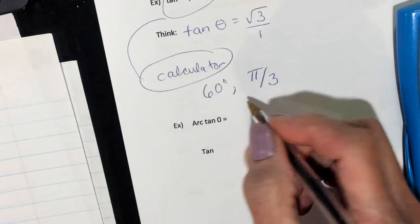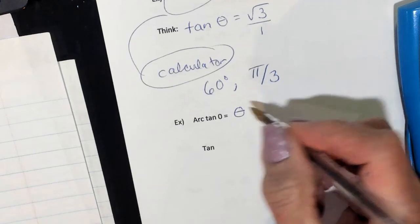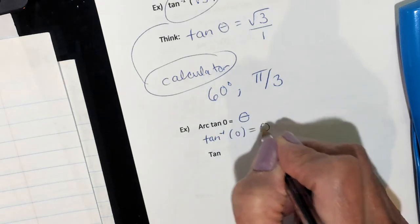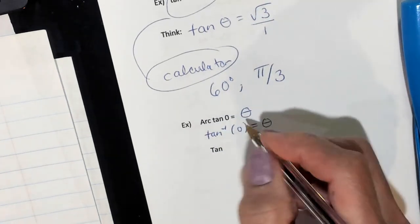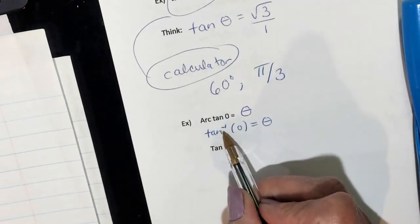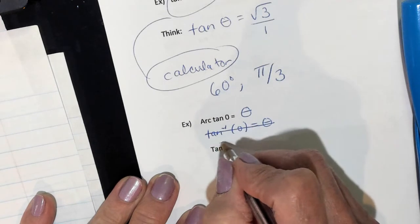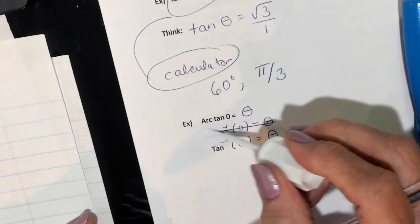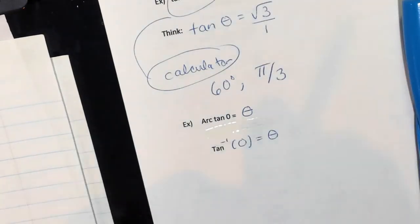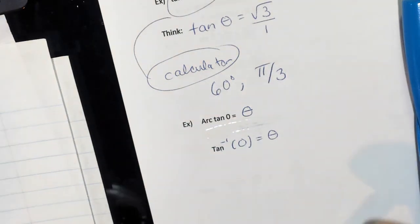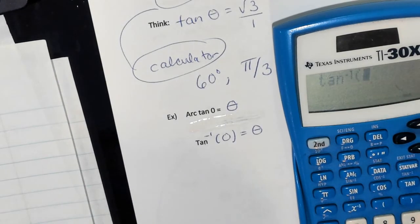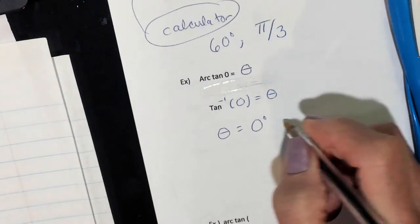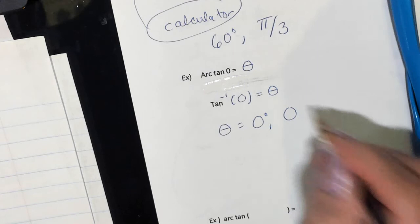The arc tan of 0 equals theta. Arc tangent is the same as inverse tan. So inverse tan of 0 equals theta. On your calculator, go second function, tan of 0. And I got 0 — so theta is 0 degrees, or in radians, just 0 radians.